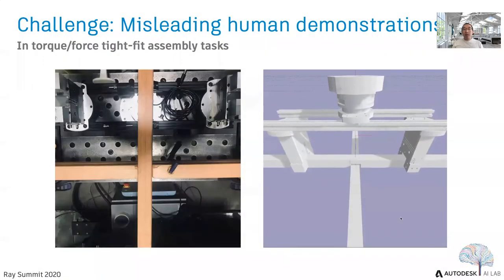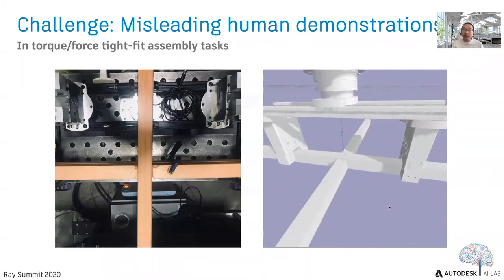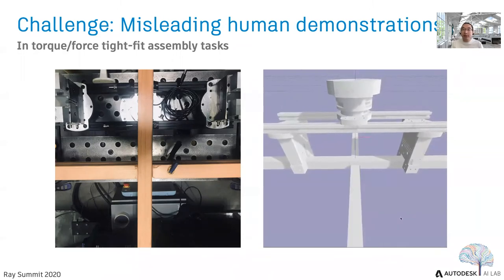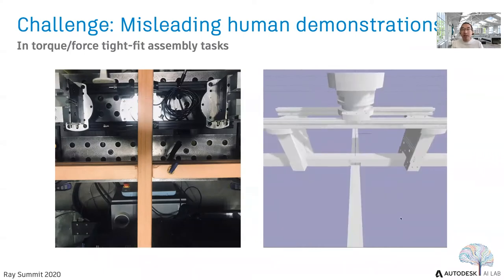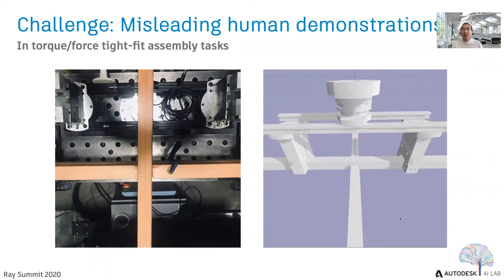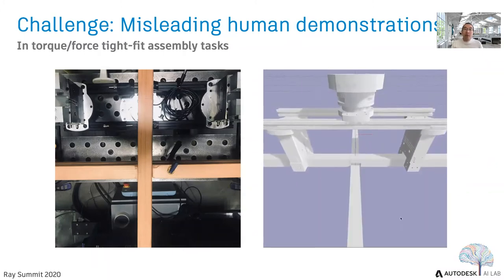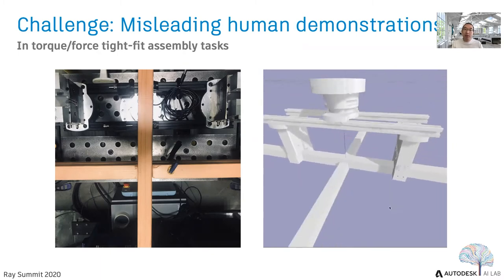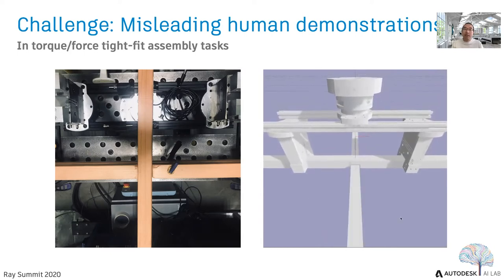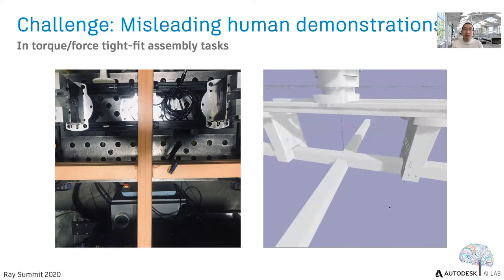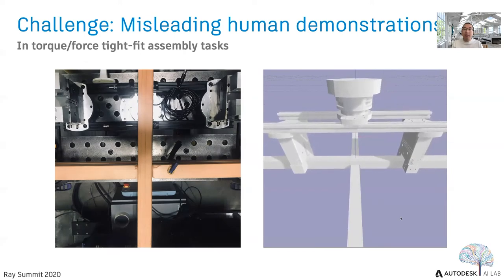One challenge we found from this project is that human demonstrations can be misleading sometimes, especially in torque force tight-fit assembly tasks. In simulation, human demonstrators only have vision feedback to control and perform the task. However, when the robot performs the task — either in simulation or in the real world — it only has haptic feedback. So there is a misalignment between real transitions from the robot and demonstrations collected by humans.